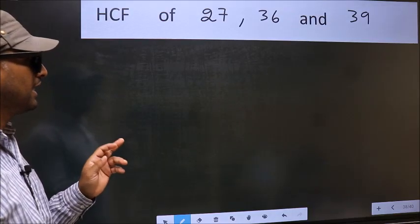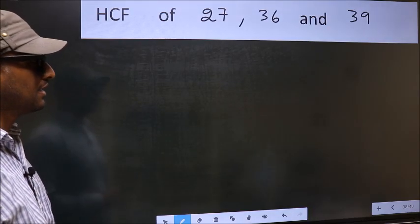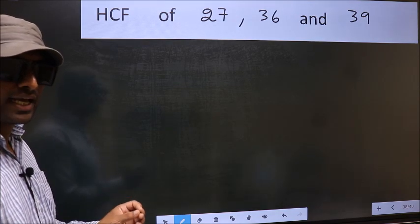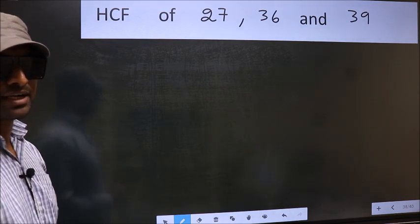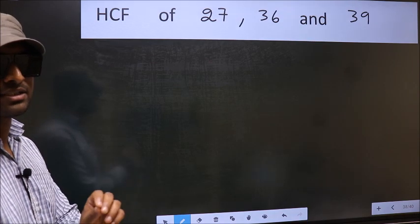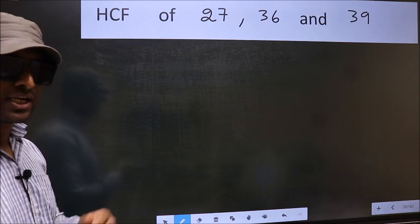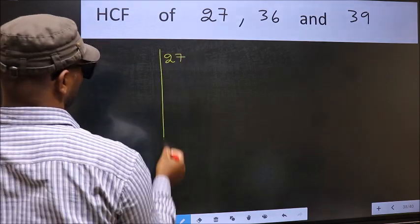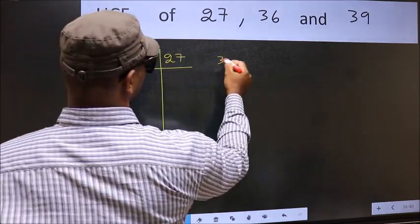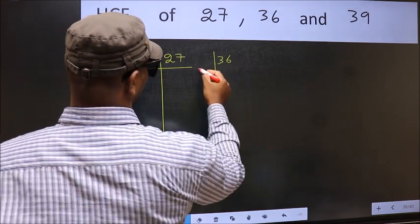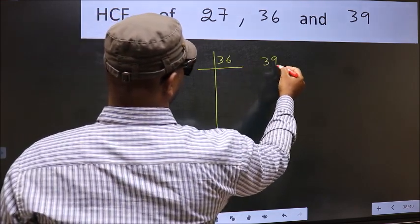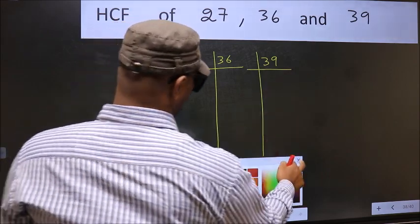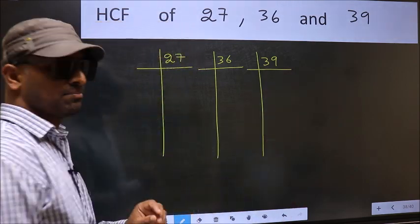HCF of 27, 36, and 39. To find the HCF, we should do the prime factorization of each number separately — 27, 36, and 39. This is step 1.